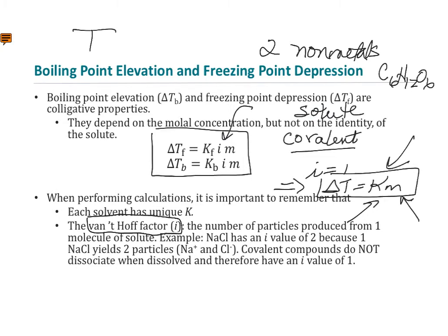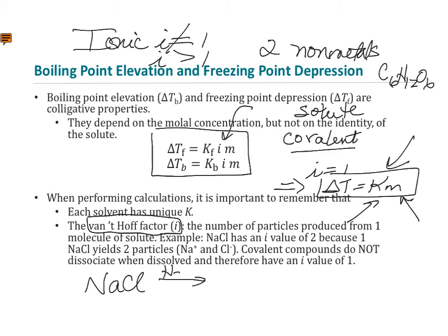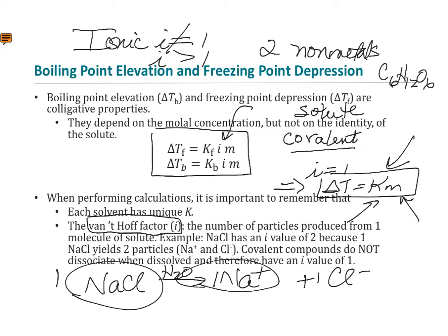If you have an ionic compound, i is not 1 — i is greater than 1. This is because colligative properties depend on the number of solute particles dissolved. When an ionic compound dissolves in water, the first thing it does is dissociate into its cation and anion. For every one formula unit of sodium chloride dissolved in water, we get one sodium cation and one chloride anion — two particles — so i equals 2. It's very important to take the Van't Hoff factor into account.